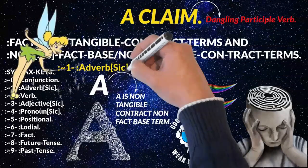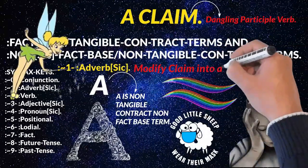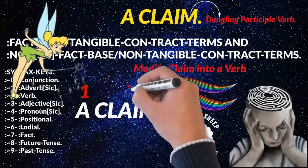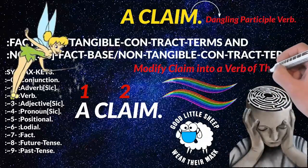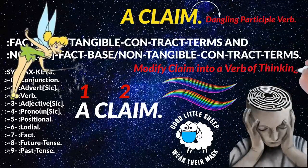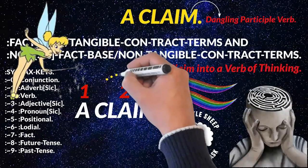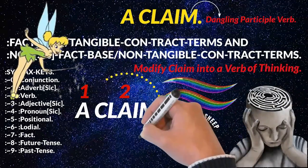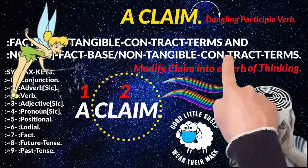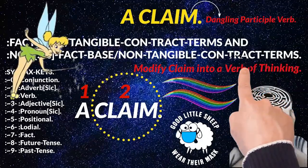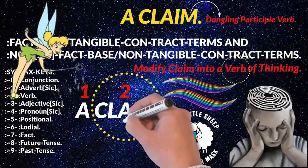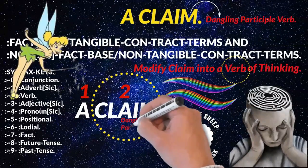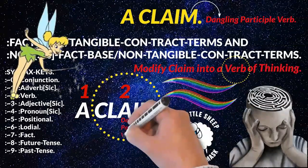Therefore, it is an adverb, and it's modifying this tangible contract word 'claim' into a verb — a verb of thinking. Now, the verb of thinking is a claim of what? There's nothing there. Therefore, it is a dangling participle verb — a verb that's dangling there with no closure.